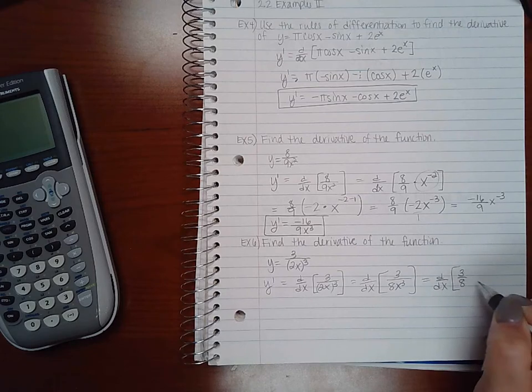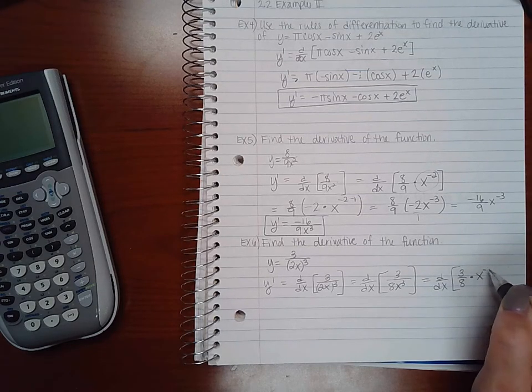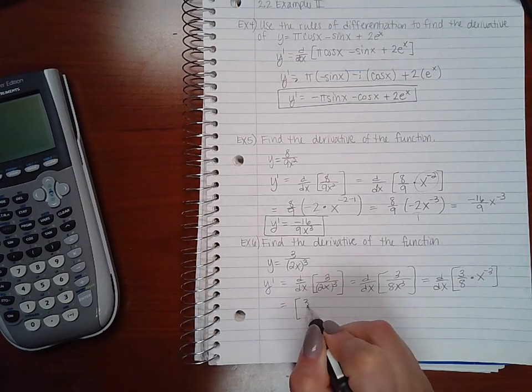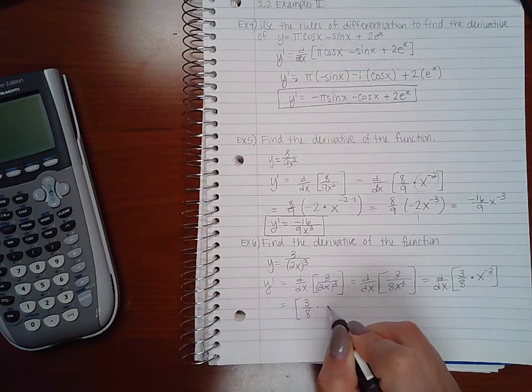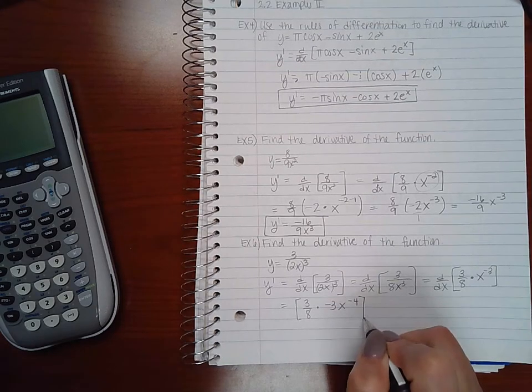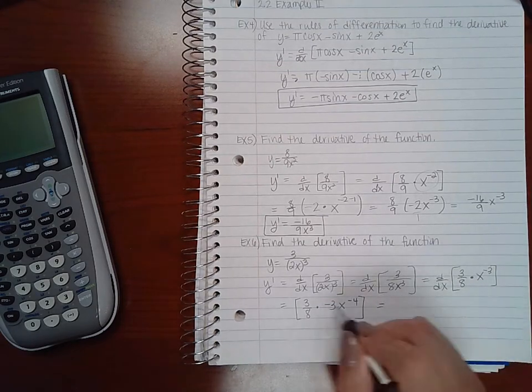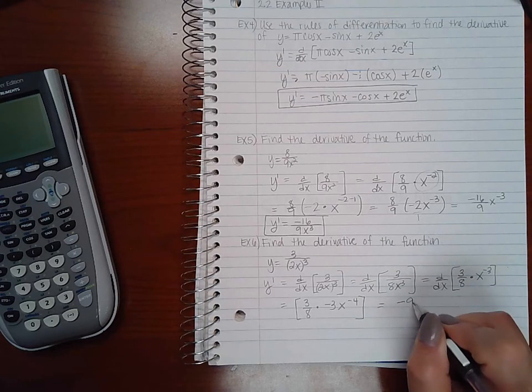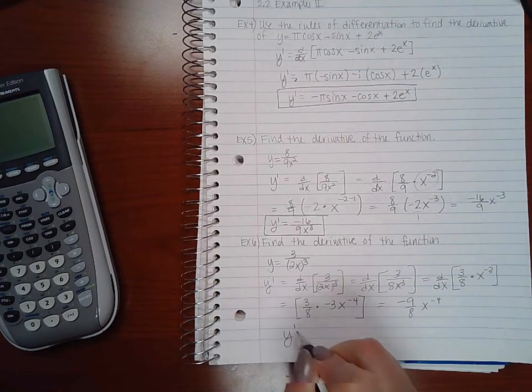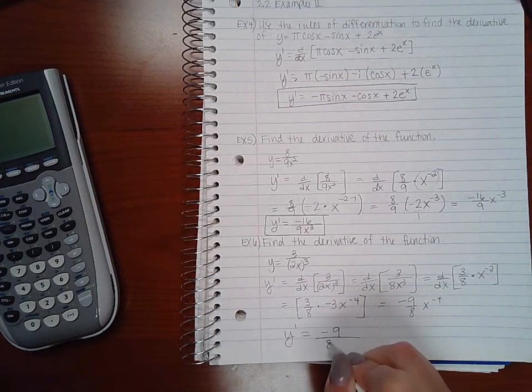Take the constant multiplier out, rewrite x as a negative exponent since it's in the denominator, then use the power rule. Combine the constants, and finally rewrite that negative exponent in the denominator.